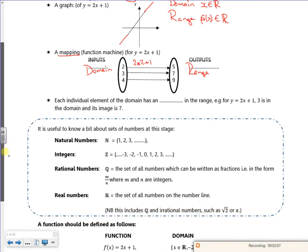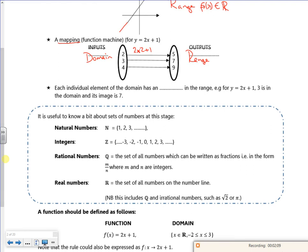That's about it really, it's just about what you put in and what you get out and understanding what's going on. Each individual element of a domain has an image, like a separate number in the range. This has only got three numbers that I'm using: the 2 maps to a 5, the 3 maps to a 7, and the 4 maps to a 9.